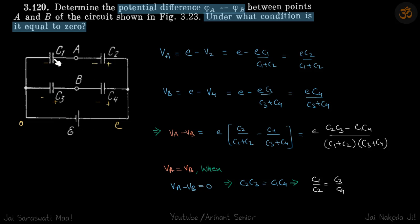If we are given this circuit with capacitors C1 and C2 in parallel with C3 and C4, and we have a battery E, we need to find the potential difference between points A and B.